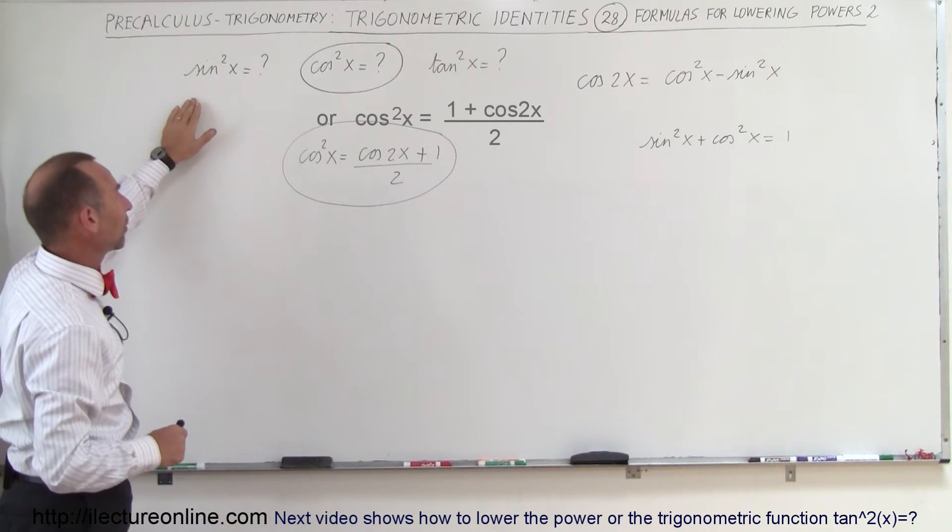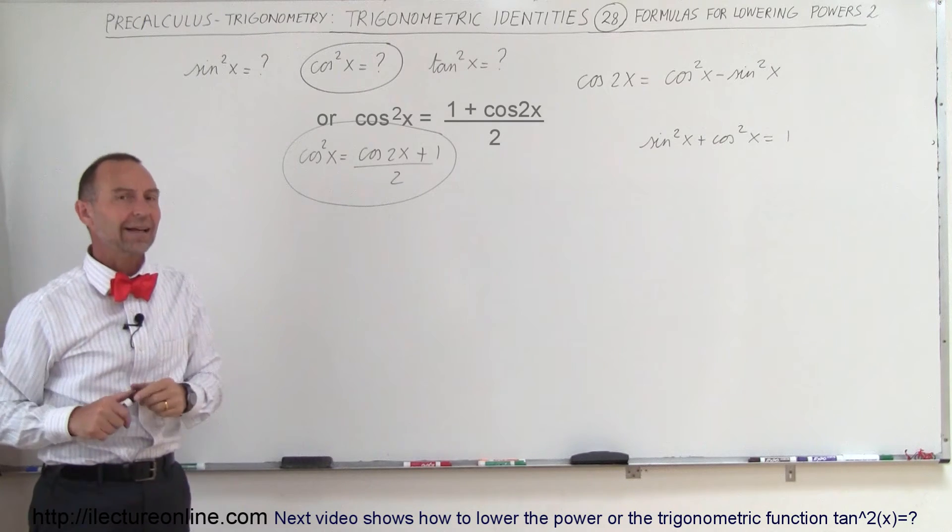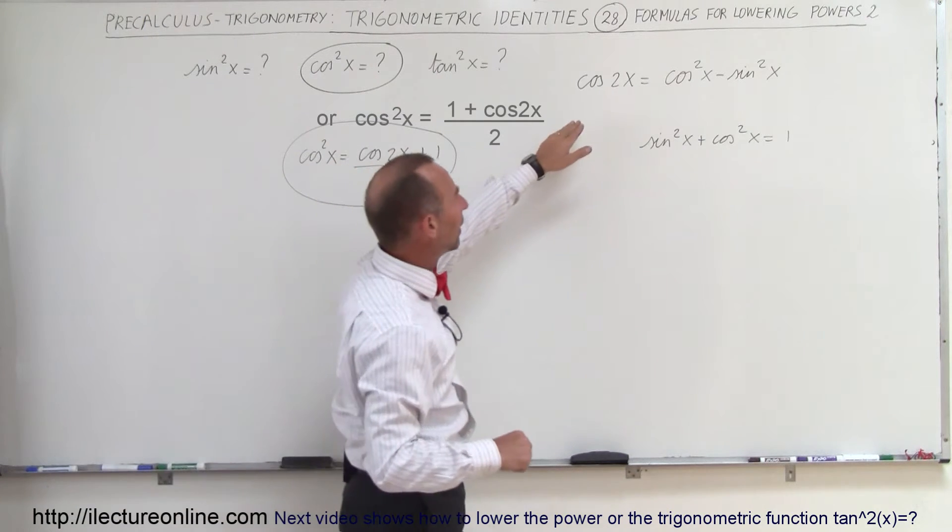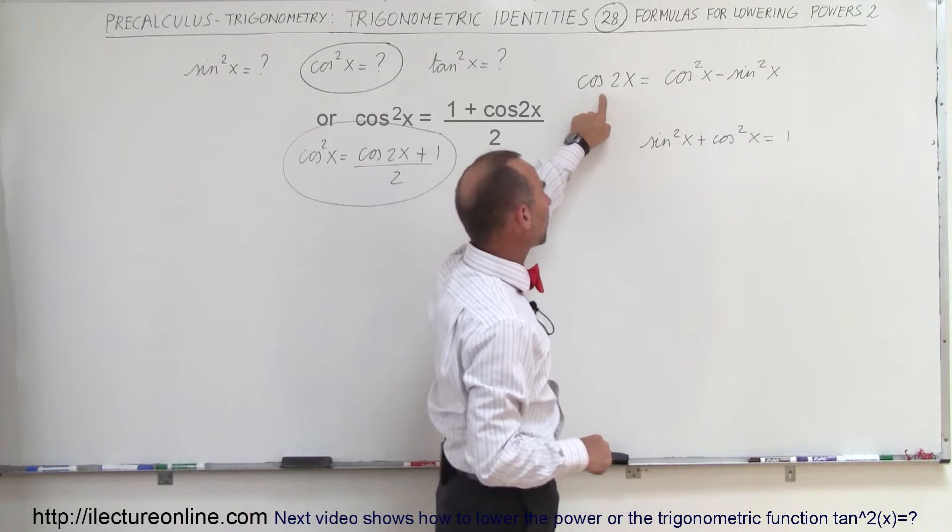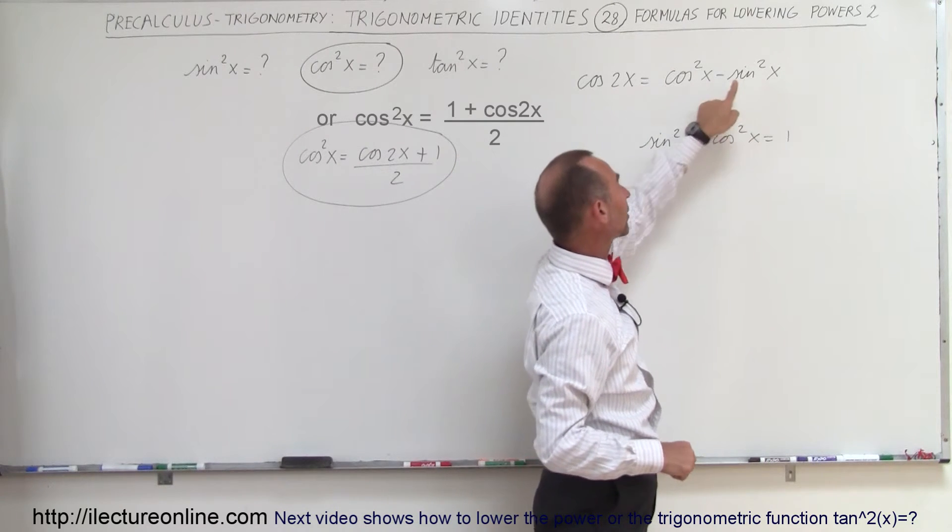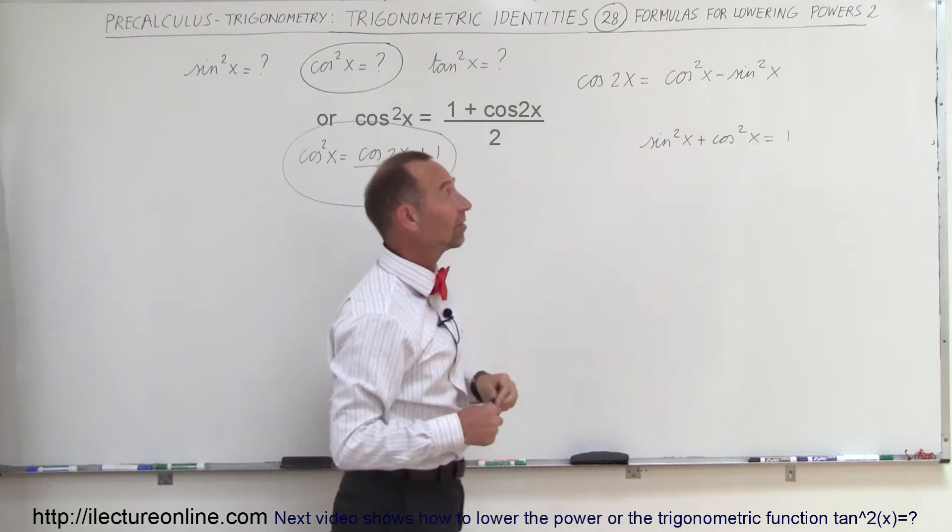We want to do the same for the sine square of x, and the methodology is almost exactly the same. We're going to use this equation again, the cosine double angle, because now we have a relationship between the sine square of x and something we can express in single angle.